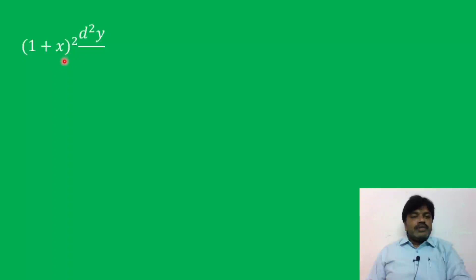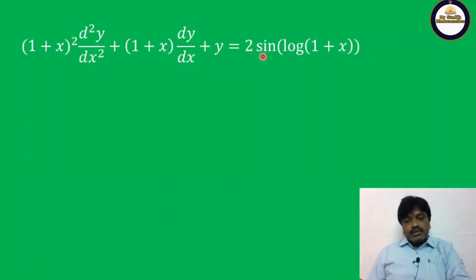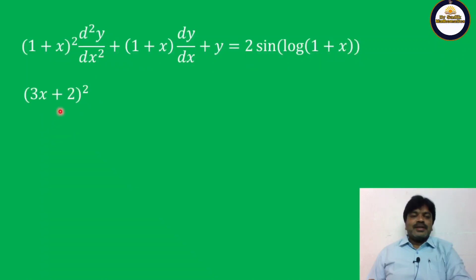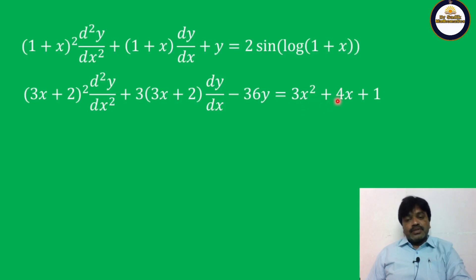We have two problems: first, (1+x)² d²y/dx² + (1+x) dy/dx + y = 2 sin(log(1+x)). Second, (3x+2)² d²y/dx² + 3(3x+2) dy/dx − 36y = 3x² + 4x + 1.